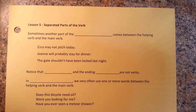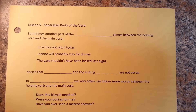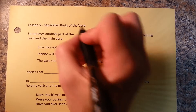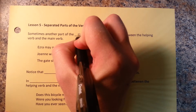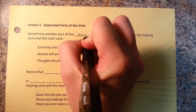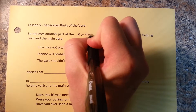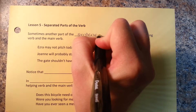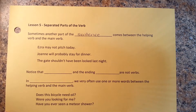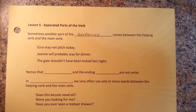Welcome to lesson 5: separated parts of the verb. Sometimes another part of the sentence comes between the helping verb and the main verb. Let's take a look at these examples.